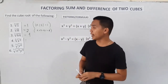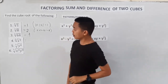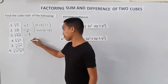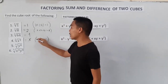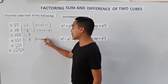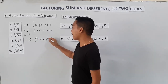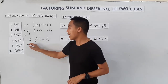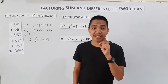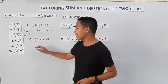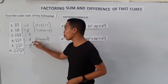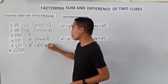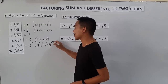Let's proceed with the variable. How to find the cube root of x³. The answer is x. Because x times x times x equals x³. Or simply, you divide the exponent by three. How about the cube root of y to the sixth power? That is y squared. Because y squared times y squared times y squared equals y to the sixth power.